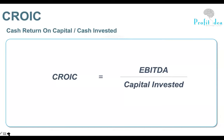Suppose I come across a company with a CROIC ratio of more than 100. If a company has a CROIC greater than 100, it simply means that for every rupee invested, I am making one rupee on that — doubling my capital every year. A company which is able to do that is not an ordinary business; that is an extraordinary business.